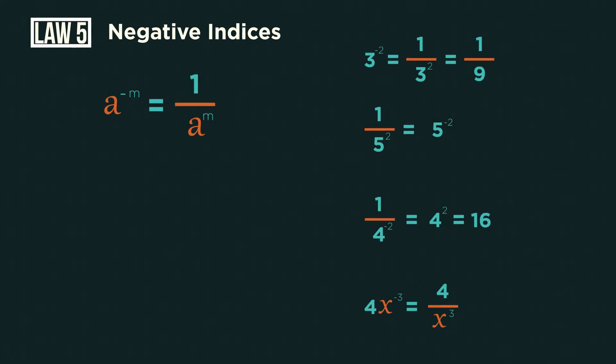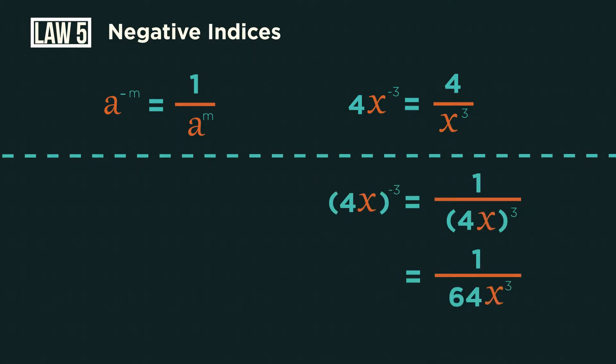Have a look at these examples to see the negative indices law in action. See how on the fourth one, only the x to the negative three drops down. This is because the negative three only belongs to the x. We would need brackets for it also to affect the four.